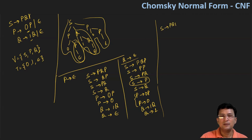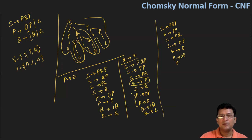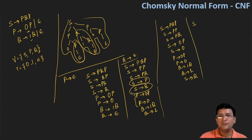We already have S produces PQP, S produces PP, S produces PQ. To remove S produces P, all productions derived from P — like zero P and zero — get added to S. So S produces zero P and S produces zero are added. The remaining productions P produces zero P, P produces zero, Q produces one Q, and Q produces one stay as they are. We also have S produces Q, which is another unit production to remove.